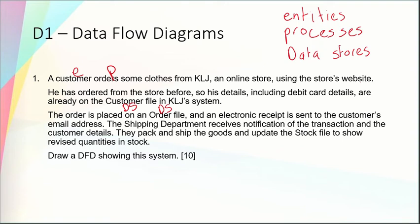An electronic receipt is sent to the customer's email address. The shipping department is an entity. It receives notification of the transaction and the customer's details. They pack and ship the goods and update the stock file to show revised quantities in stock. So packing and shipping the goods would be a department doing something — fulfilling the order for the customers — so here we have a process, and the stock file is another data store.